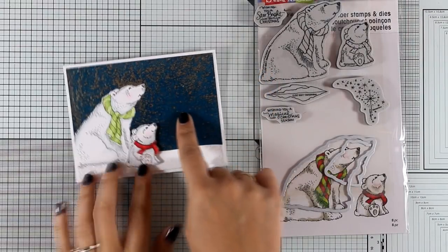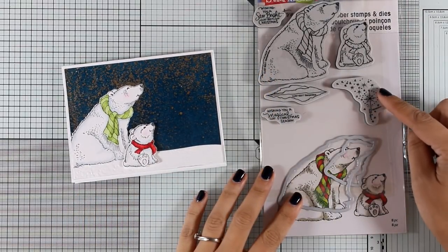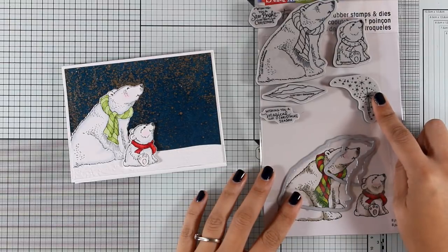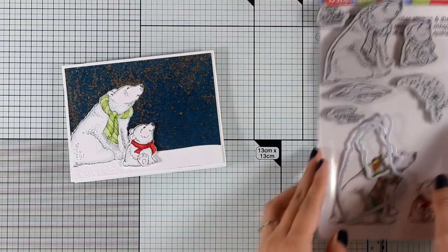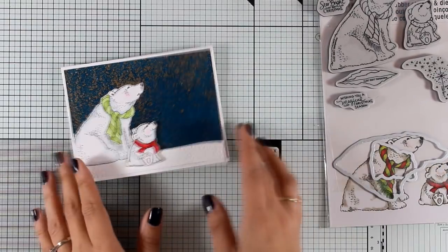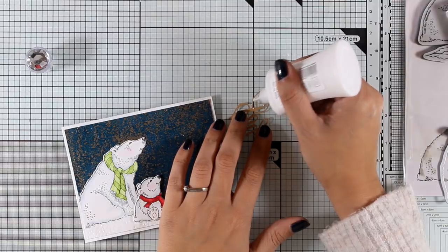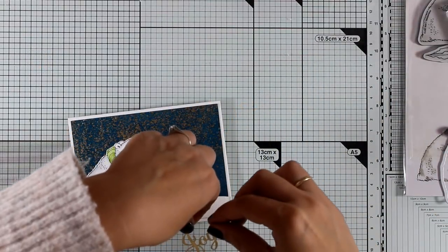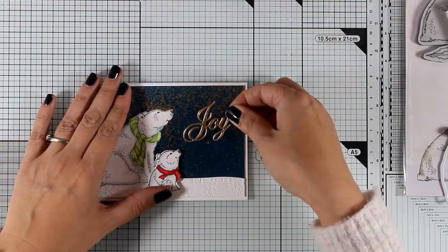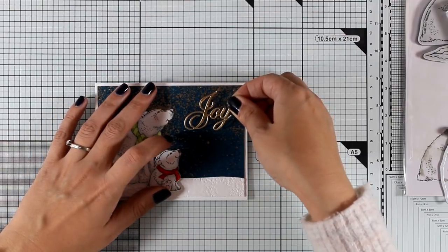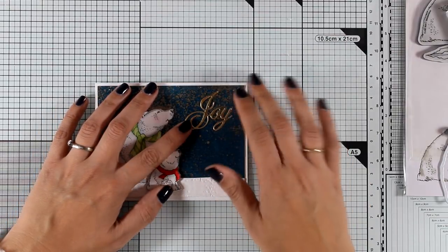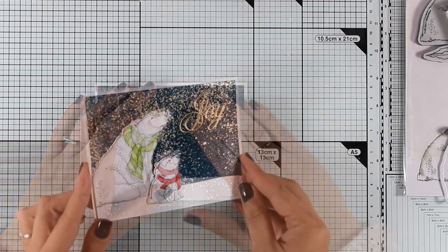In the stamp set you get this bunch of stars that you can stamp to give the polar bears something to look at. In my case, because I have this embossed background, I cannot stamp anything on top of it. Instead, I'm going to die cut my sentiment and stick it there. Another option is to stamp your sentiment on another piece of paper, cut it out, and stick it up there.